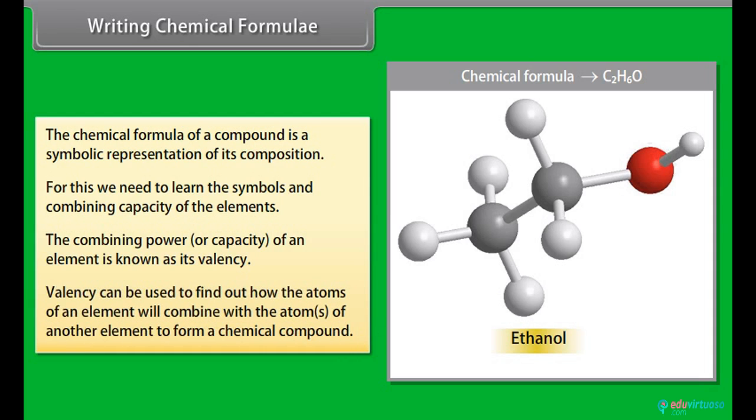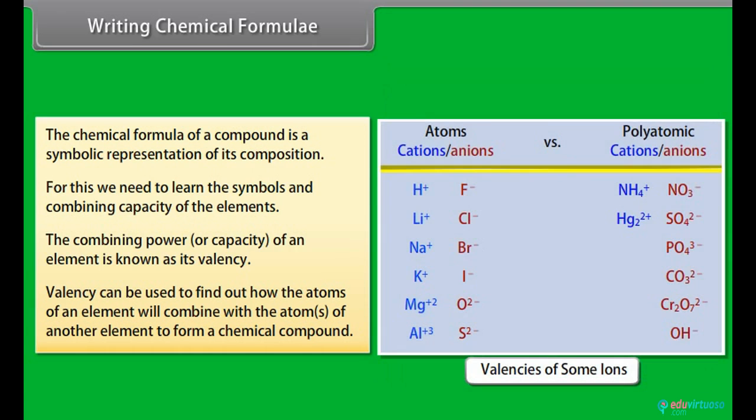Valency can be used to find out how the atoms of an element will combine with the atoms of another element to form a chemical compound. The valencies of some simple and polyatomic ions are given in table.